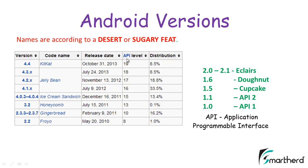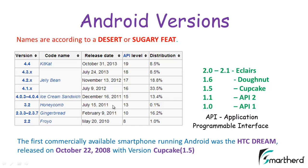I will talk about the APIs during development tutorials, along with the release dates. The first commercially available Android smartphone was the HTC Dream, released in the USA on October 22, 2008, with Android version 1.5. So Cupcake was the first Android version in the HTC Dream; later 1.6 came, but both were not very efficient.